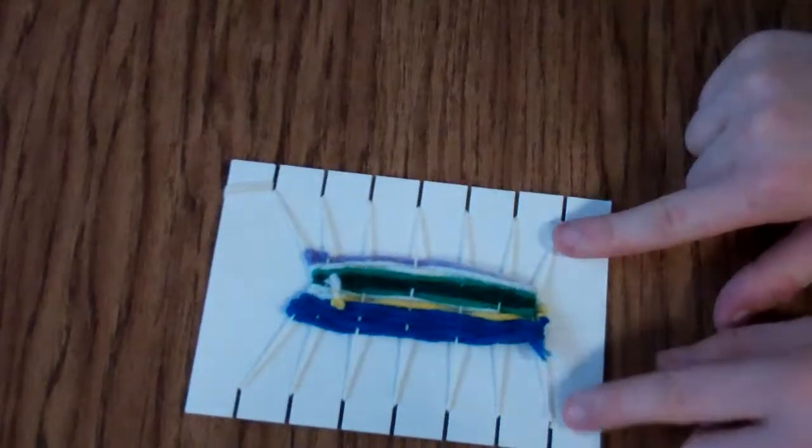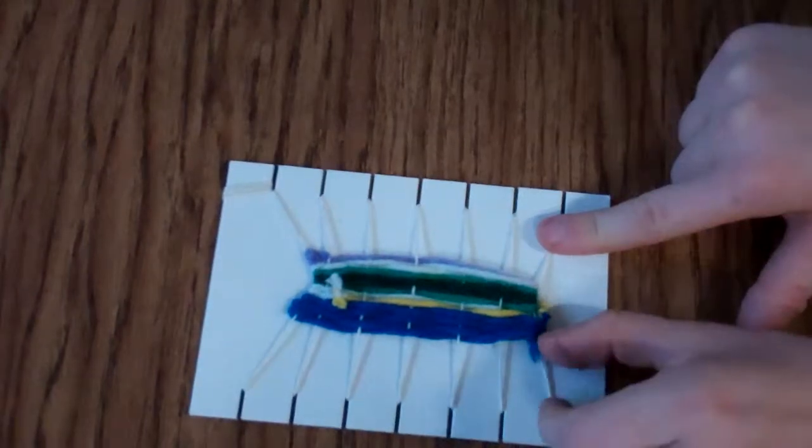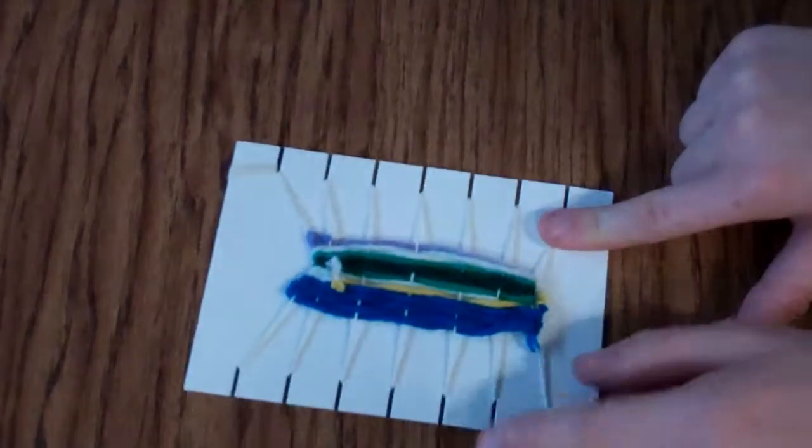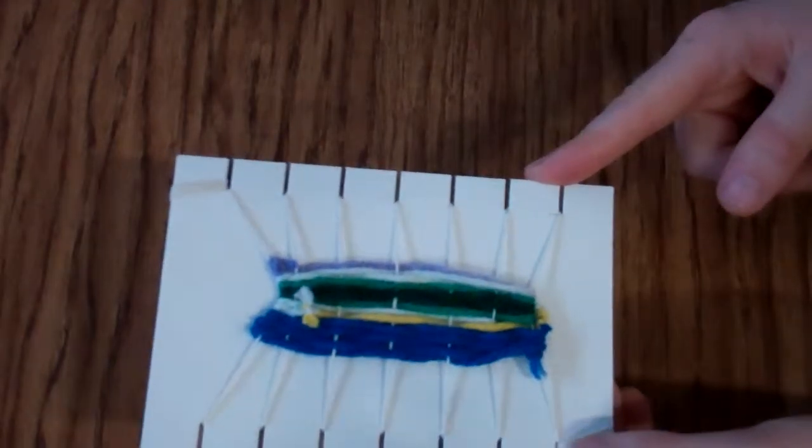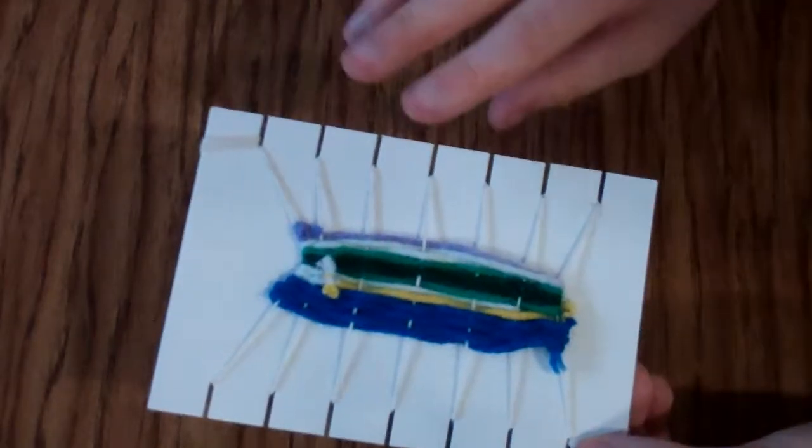You want to leave at least about a half an inch to an inch of warp. That's the string on both sides. So these mini looms do a really small weaving. It's good for practice weaving. My next weaving I'll do on a bigger loom.